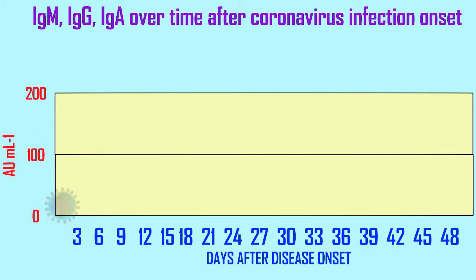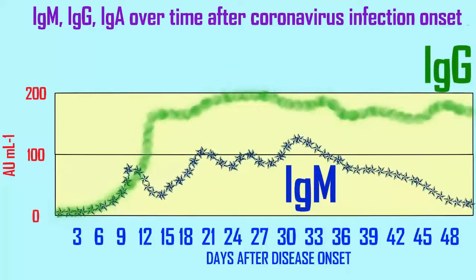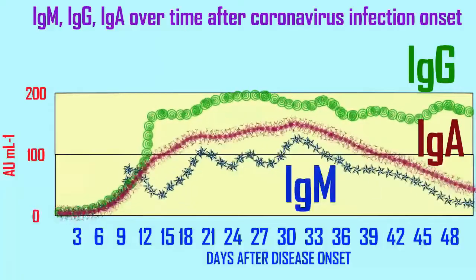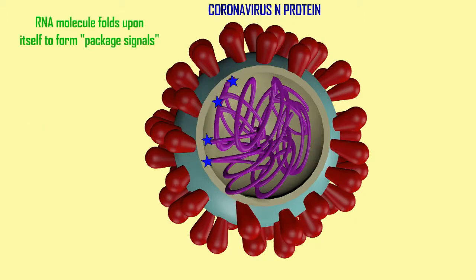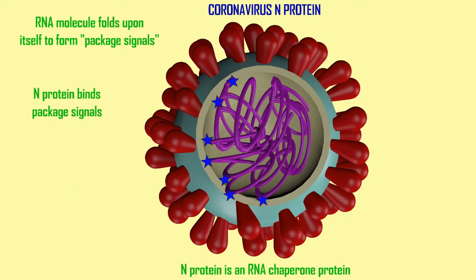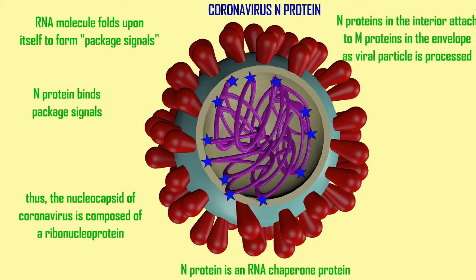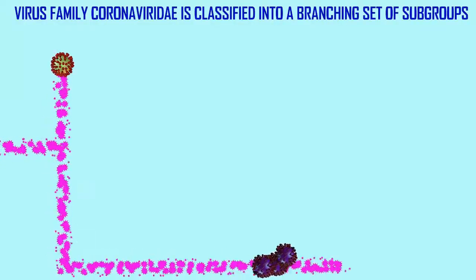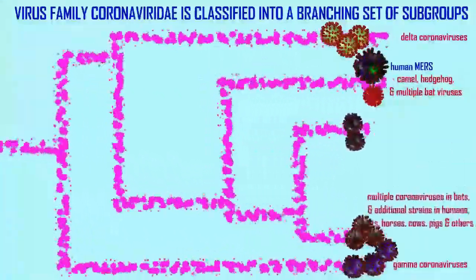While blood tests have focused primarily on IgM and IgG, the antibody IgA can also be produced against coronavirus and is released into body secretions such as the secretions of the lungs, where it binds coronavirus there. Coronavirus makes a number of proteins — not just the spike protein — and antibodies are developed against a number of different viral proteins, such as the N protein.